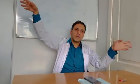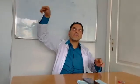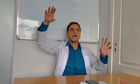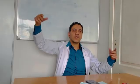Pathophysiology of the nervous system. The nervous system is divided into central and peripheral. Central includes the brain and spinal cord. Peripheral includes nerves and ganglia.